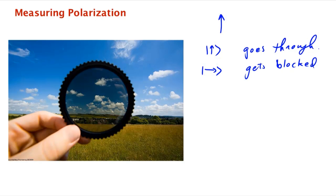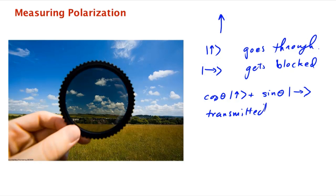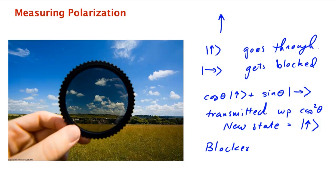What if the photon is in a superposition of vertical and horizontal? If it makes an angle θ with vertical, it's in the state cos θ |vertical⟩ + sin θ |horizontal⟩. What happens is exactly what you'd expect: it gets transmitted with probability cos²θ. And if it gets transmitted, the new state of the photon is exactly vertical polarization. It's blocked with probability sin²θ.